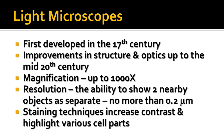One important limit to light microscopes is the resolution — that is, the ability to show two nearby things as separate objects. Under light microscopes, the limit of resolution is that you can't see things any more closely spaced than 0.2 micrometers. A micrometer is a thousandth of a millimeter, so we're talking about two ten-thousandths of a millimeter.